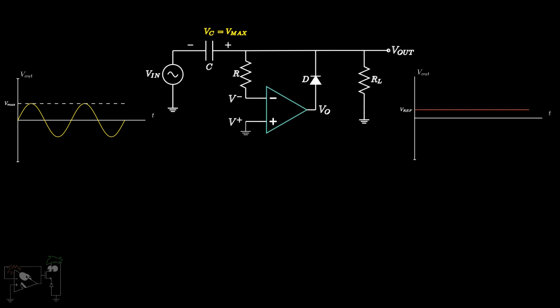However, during the positive half cycle, V- is greater than V+, hence the op-amp output is negative. Therefore, the diode is reverse biased and hence the voltage Vmax across the capacitor, acquired during the negative half cycle, is retained. This voltage Vmax is in series with the positive peak voltage Vmax. Hence the output peak voltage will be Vmax plus Vmax, or 2Vmax.